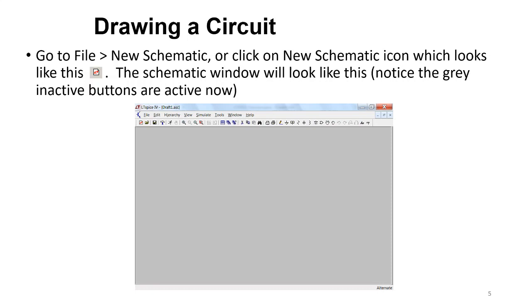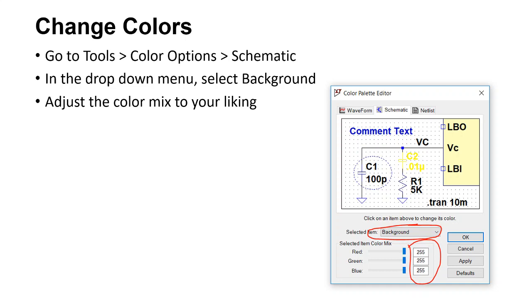To start drawing a circuit, go to File > New Schematic, or click the New Schematic icon — it looks like a piece of paper with a red symbol. This is where you'll lay out all your components, so you need this open to get started. I personally like a white background. Go to Tools > Color Options, click Schematic in the dropdown, and you can select Background and Wires and adjust the color mix to your preference.